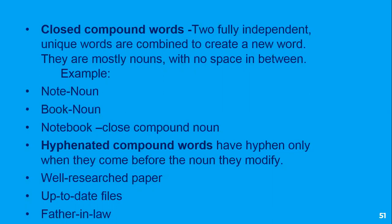The third category is the hyphenated compound words. It is important to know that we use the hyphen only when the words come before the noun they modify. For example, you have well-researched paper. Paper is the noun, and it is modified by well-researched. Both well and researched modify the noun, and since they come before the noun, you need to use a hyphen. Such compound words are called hyphenated compound words.